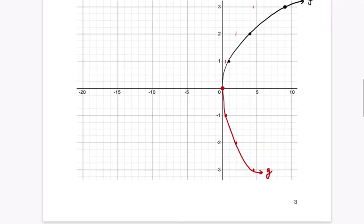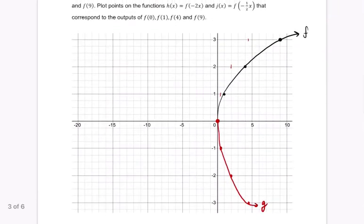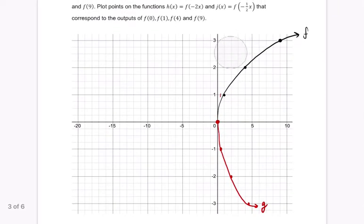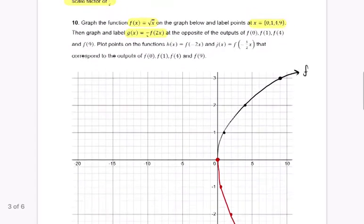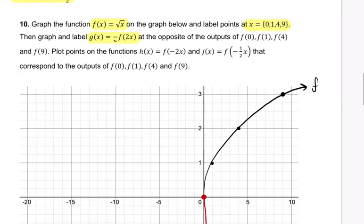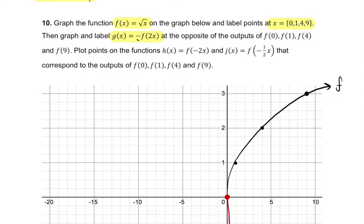So we have f and g. So you can see that shape is changing, even though it's badly drawn by me. And if you look at the instructions, it says it's applied at the opposite outputs of f of 0, 1, 4, and 9. So the opposite heights of 1, f of 1 is at 1, f of 0 is at 0, same opposite height of 0, 0.